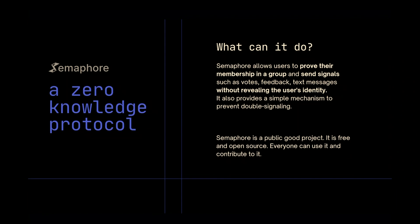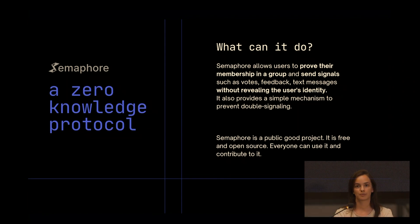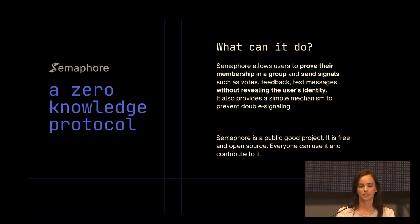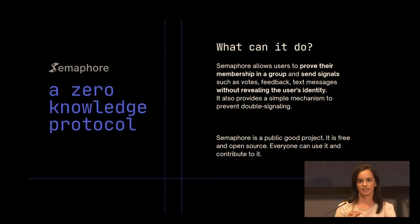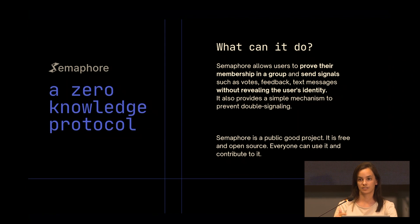Let's start with what is Semaphore. Semaphore is a zero-knowledge protocol that allows users to prove their membership in a group and send signals — such as votes, feedback, or text messages — without revealing their identity. This means that signals are not connected to identities.